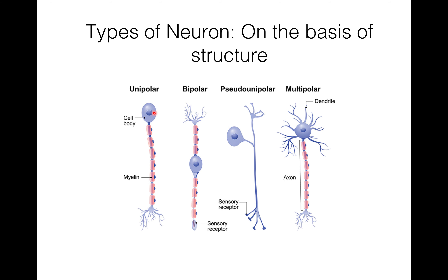In a unipolar neuron there is one cell body and one process. In a bipolar neuron there are two processes separated by the cell body. Pseudo-unipolar neurons have a single elongated process with the cell body situated to one side — with dendrites and an axon. In multipolar neurons there are more than two processes, with a single axon and multiple dendrites.